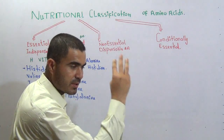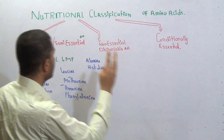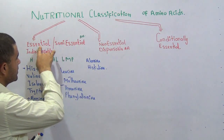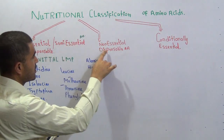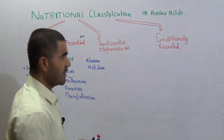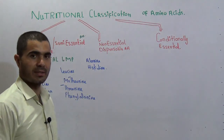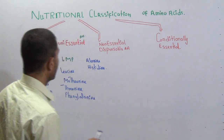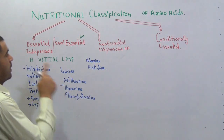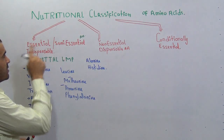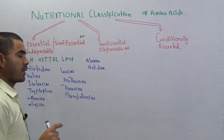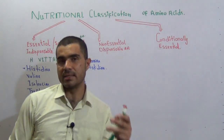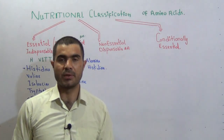The amino acids in this category are classified into three subgroups: one is essential amino acid, second one is non-essential, and third one is conditionally essential. The first — essential amino acids — are also called indispensable amino acids.